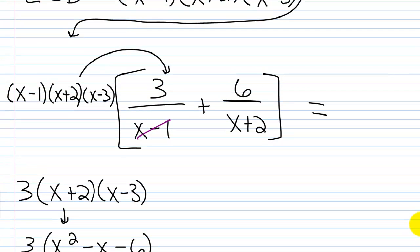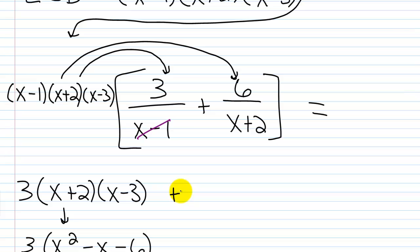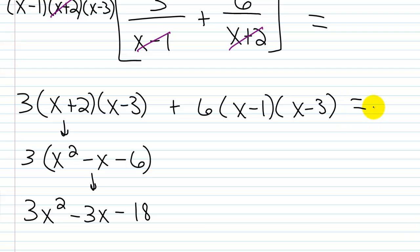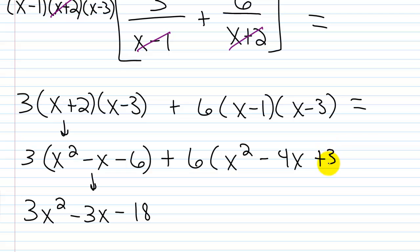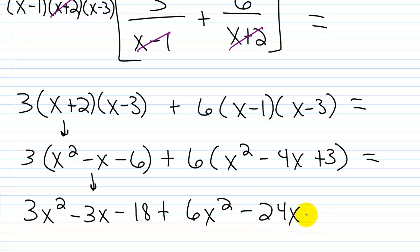Now using the distributive property, we multiply the LCD by 6 over (x plus 2). The (x plus 2) cancels, leaving 6 times (x minus 1)(x minus 3). FOILing: x squared minus 4x plus 3, then multiplying by 6 gives 6x squared minus 24x plus 18.